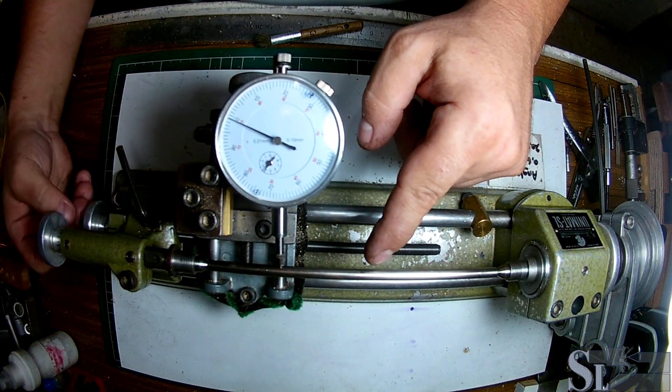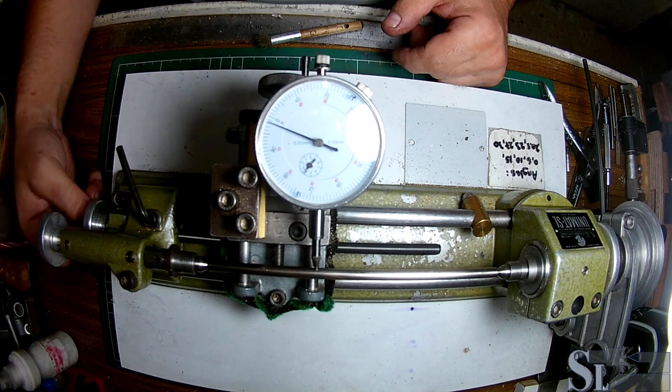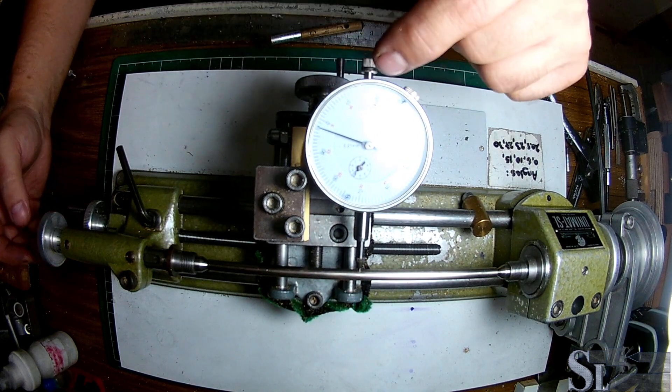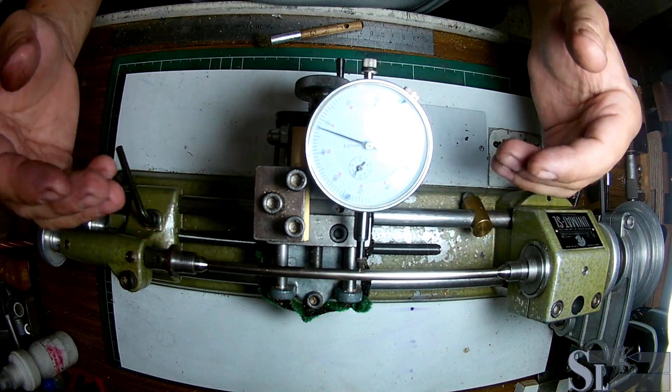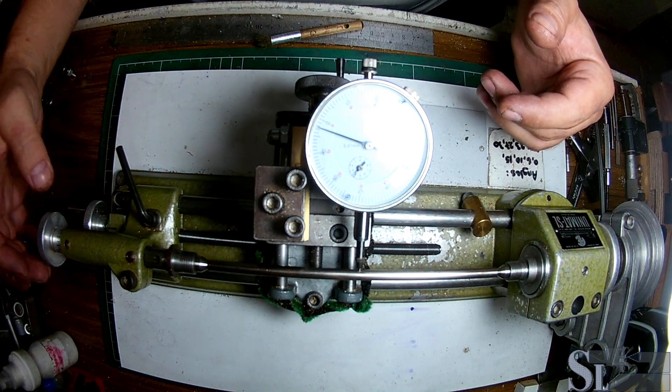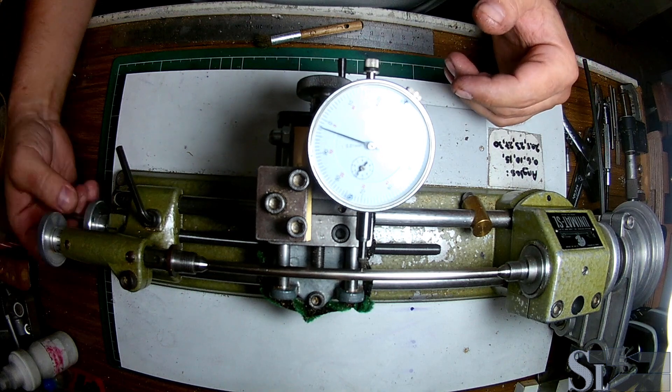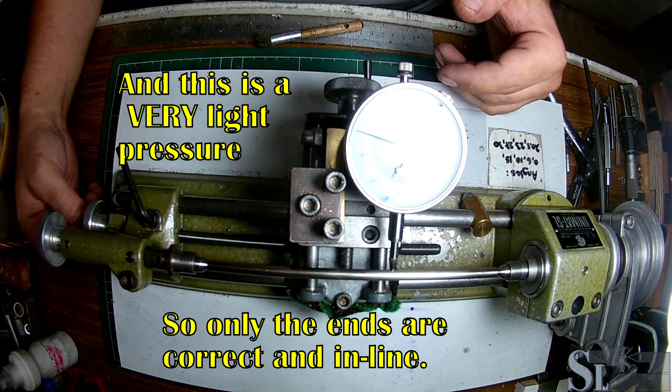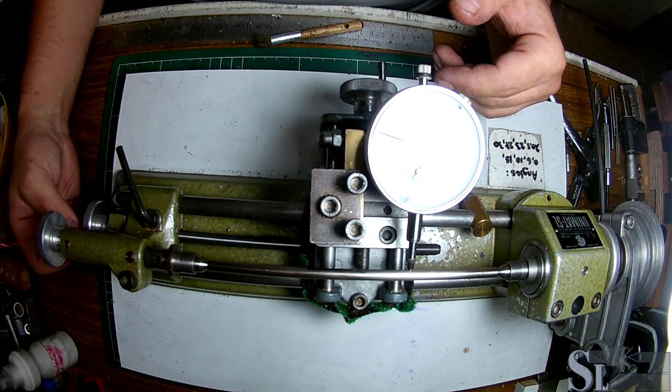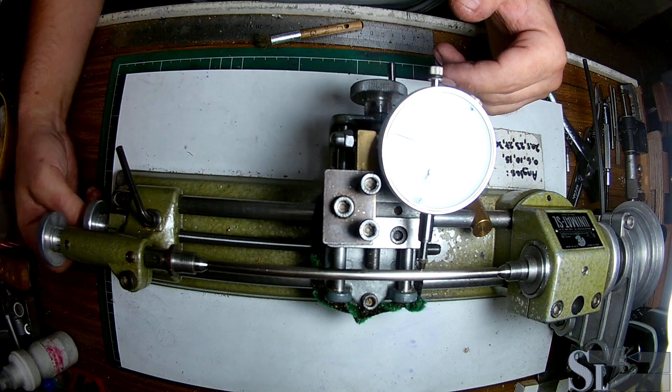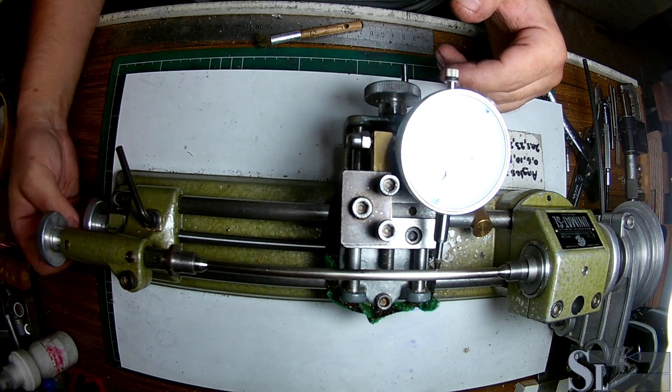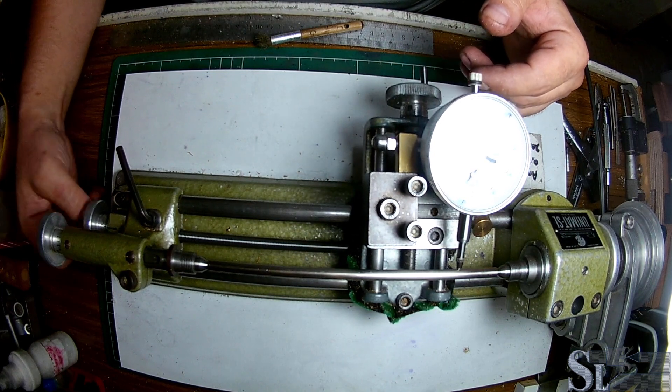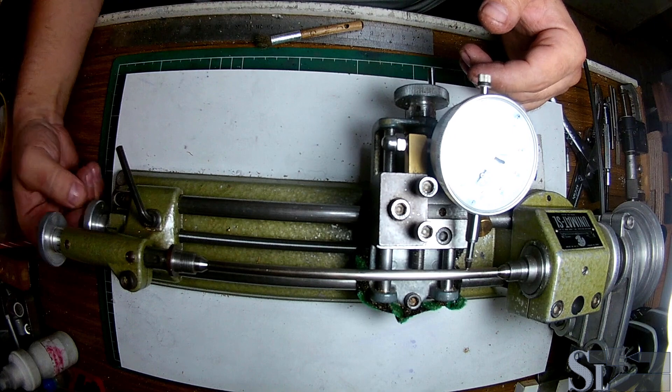You can see there's a slight belly here. We're off zero now and that's because the bar is bending a bit because we're applying slight pressure from the tailstock. There's a balance between applying slight pressure and not at all, when the bar is free and loose, and over-pressurizing it when it really bends and you can see a considerable kink.